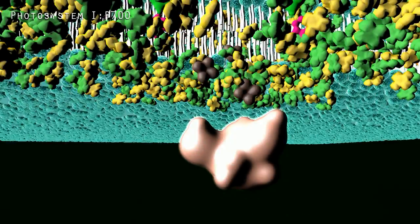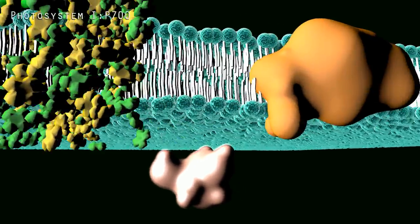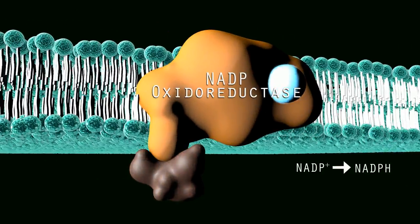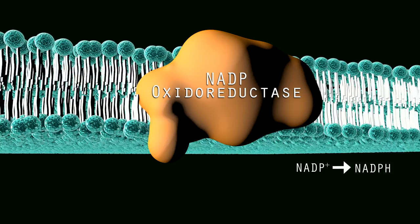In non-cyclic electron transfer, ferridoxin binds to NADP oxidoreductase, which transfers the electron to NADP to make NADPH.